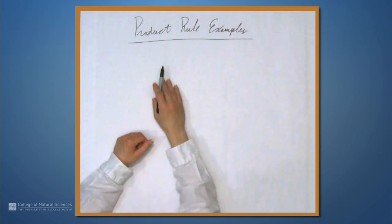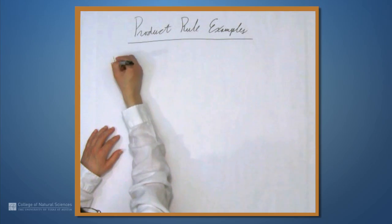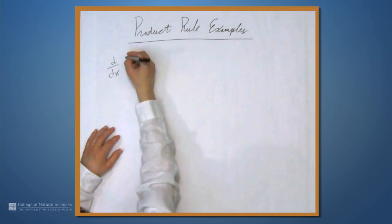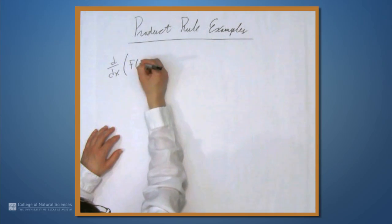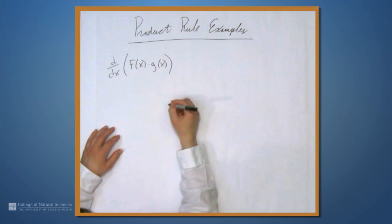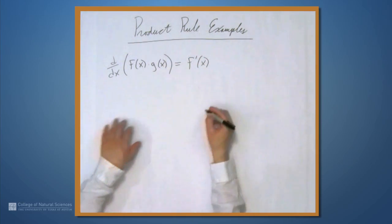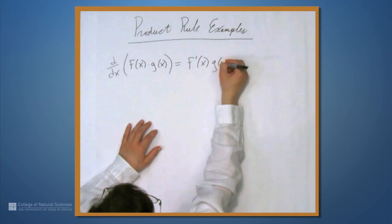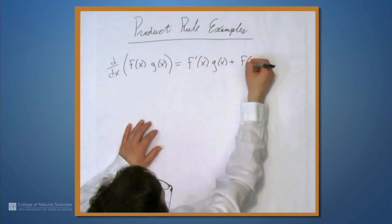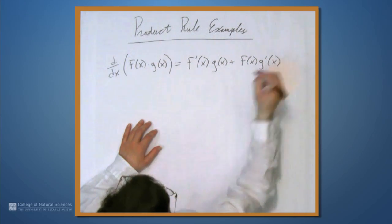We're here at the example table, and in this video we're going to look at some examples of the product rule. Let's write down what the product rule says: the derivative with respect to x of f times g is the derivative of f times g plus f times the derivative of g.